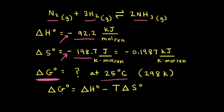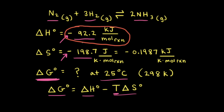To calculate ΔG⁰, we use the equation: ΔG⁰ = ΔH⁰ − T·ΔS⁰, where T is the temperature in Kelvin. We plug in ΔH⁰ equal to negative 92.2 kilojoules per mole of reaction. The temperature is 25 degrees Celsius, so 25 plus 273 equals 298 Kelvin, which we plug into the equation.